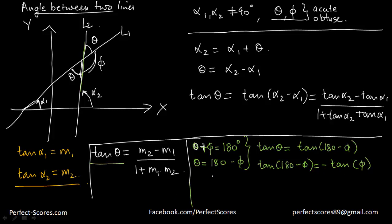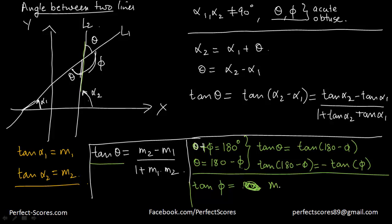Therefore, the value of tan(phi) = -(m2 - m1) / (1 + m1·m2), which simplifies to (m1 - m2) / (1 + m1·m2). So we have expressions for both angles formed by the two lines.